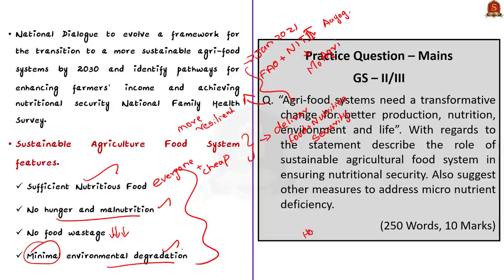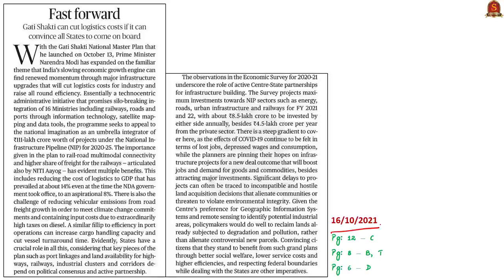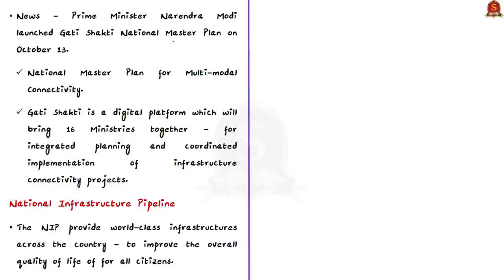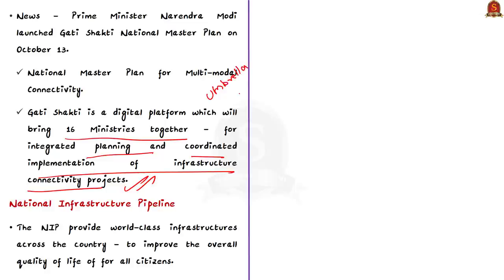In this segment, we discussed various aspects of nutrition security — how evolving a sustainable agro-food system can address nutrition deficiency, how to write a good mains introduction, and how having a bird's-eye view helps write a better mains answer. Now, let us look at the editorial article that appeared in yesterday's newspaper. Very recently on October 13th, Prime Minister Narendra Modi launched the Gati Shakti National Master Plan — a national master plan for multimodal connectivity.